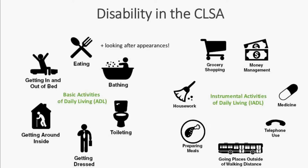Within the CLSA, disability is defined the same way in both the tracking and comprehensive cohorts, with multiple variables capturing social participation. We chose to focus on activities of daily living, subdivided into basic ADLs — mostly self-care tasks including feeding yourself, bathing, making it to the toilet in time, getting dressed, moving short distances, getting in and out of bed, and looking after appearances — and instrumental ADLs, which are more complex tasks necessary for independent living: grocery shopping, buying clothing, managing money, taking medications, using the telephone, going to places outside walking distance, preparing meals, and doing housework.